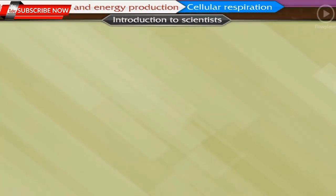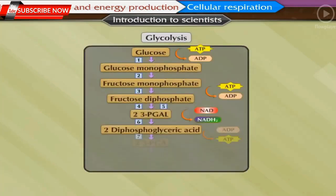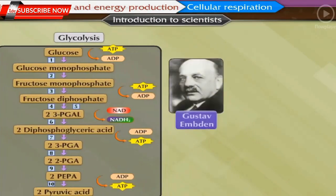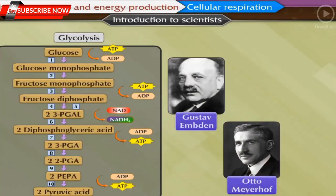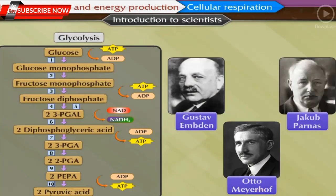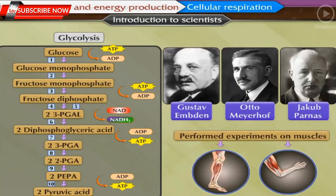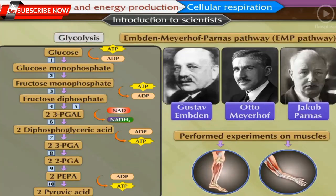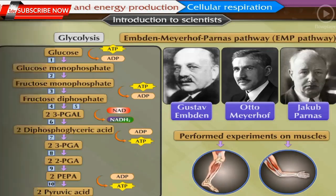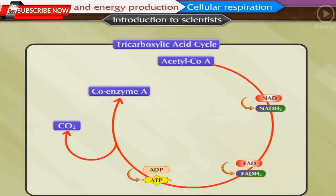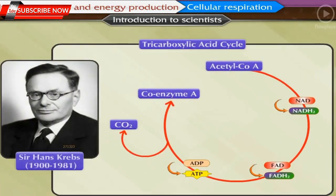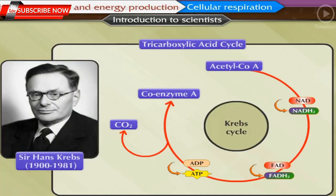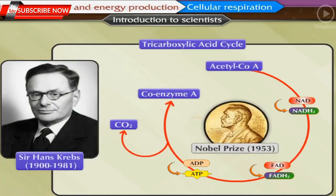The process of glycolysis was discovered by three scientists — Gustav Embden, Otto Meyerhof, and Jacob Parnas — along with their colleagues, through experiments on muscles. Hence glycolysis is also called the Embden–Meyerhof–Parnas (EMP) pathway. The cyclical reactions of the tricarboxylic acid cycle were discovered by Sir Hans Krebs, hence it is called the Krebs cycle. He was awarded the Nobel Prize in 1953 for this discovery.